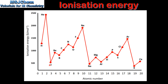Next, if we look at the elements lithium, sodium, and potassium, which all belong to Group 1, we can see that the ionization energy decreases down a group. Looking at the trend in ionization energy across a period, starting with Period 2 — that's lithium to neon — we can see that the ionization energy increases across a period.